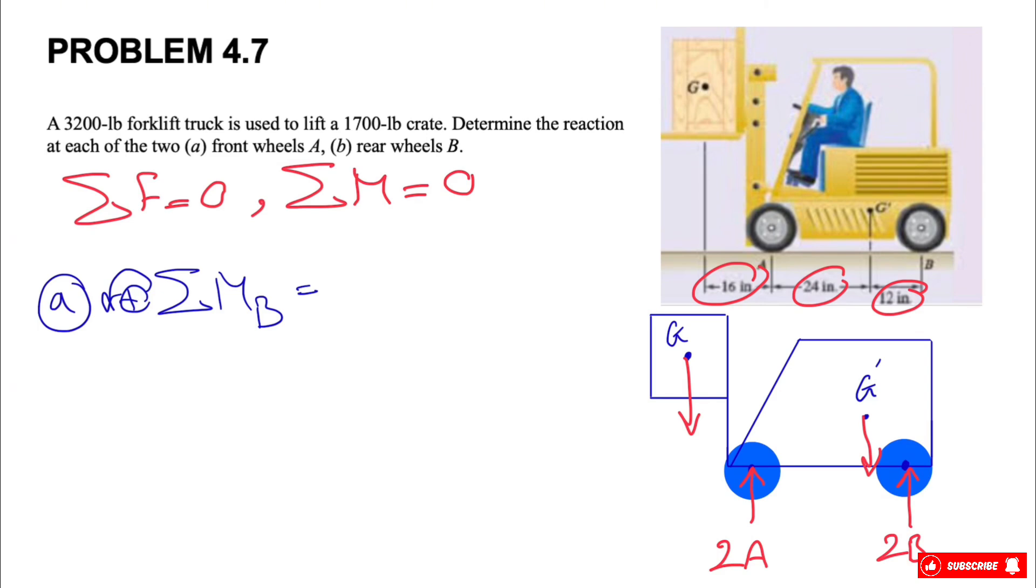So basically we're using force in the Y direction and the vertical distance from the point that we're finding the moment about, which in this case is point B, to the line of action of the force. Let's start with the moment of the crate first.